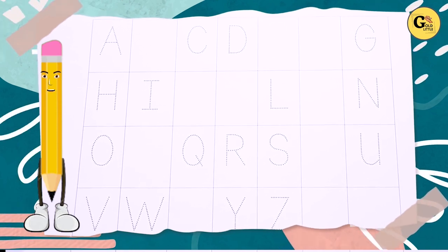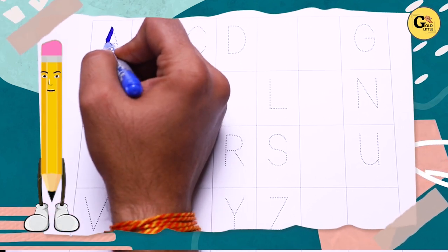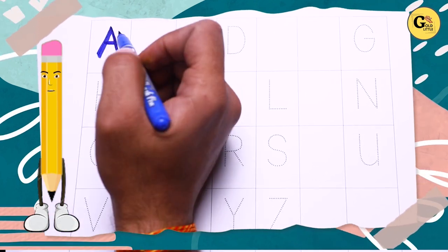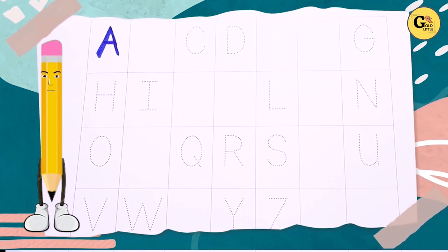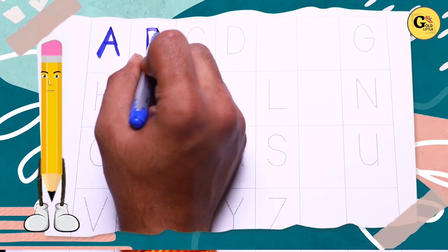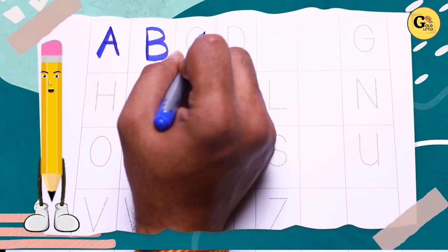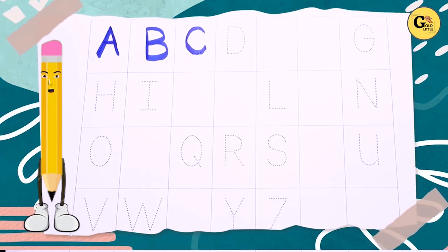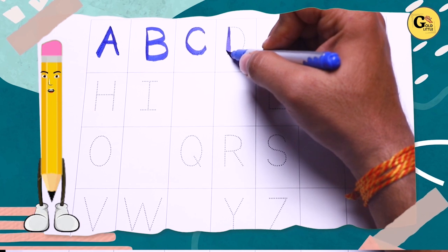So this is A. Blue color A. Now tell me what is the next? B. And next is C. Next D.